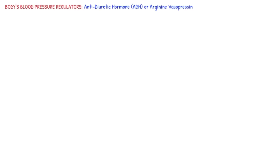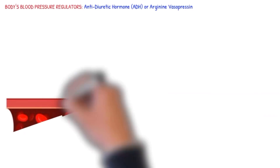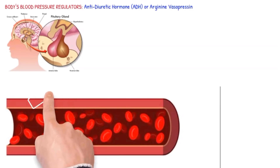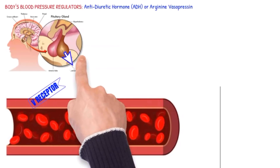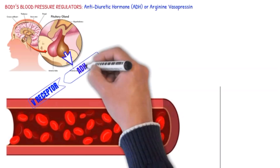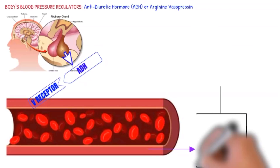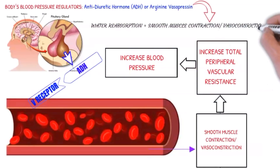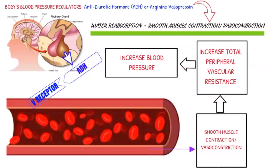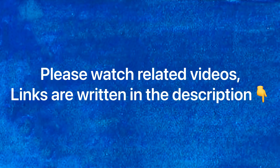Other stimuli can also cause release of vasopressin, including pain, stress, and several drugs including opiates. ADH also has a second action on vascular smooth muscle. At high levels of ADH, it causes vasoconstriction. ADH binds to V receptors on vascular smooth muscle, causing contraction and leading to increases in total peripheral resistance and thus increased blood pressure. This mechanism is synergistic with water reabsorption — both mechanisms elevate blood pressure — and is crucial in periods where arterial blood volume is insufficient to maintain tissue perfusion.